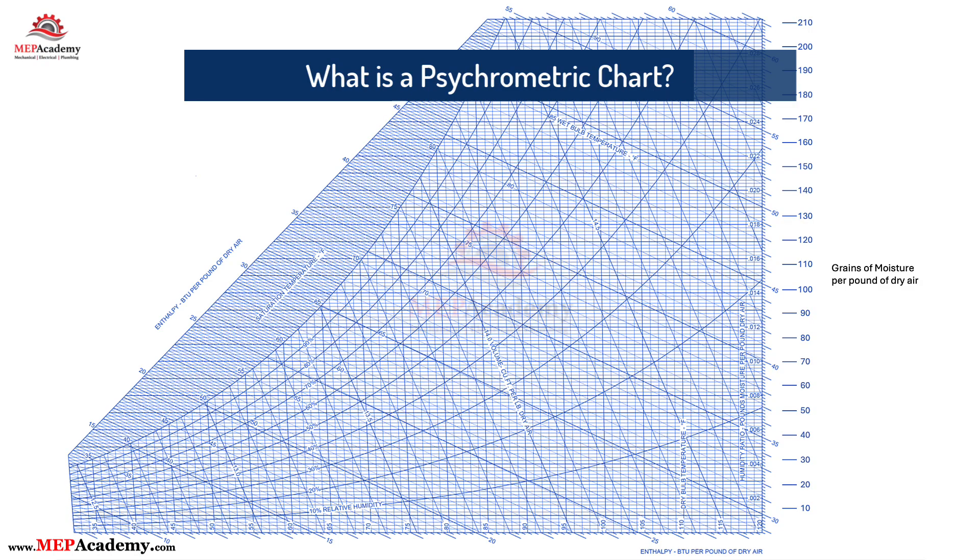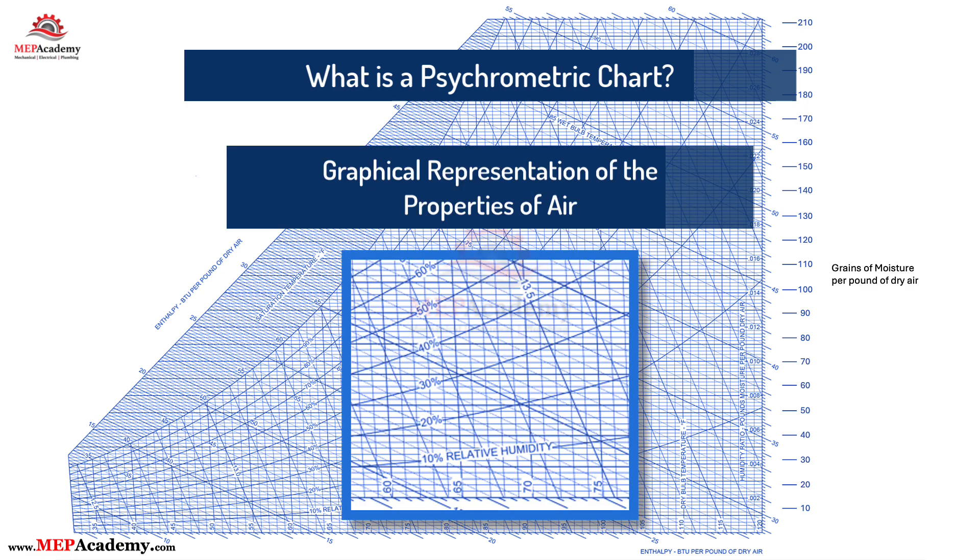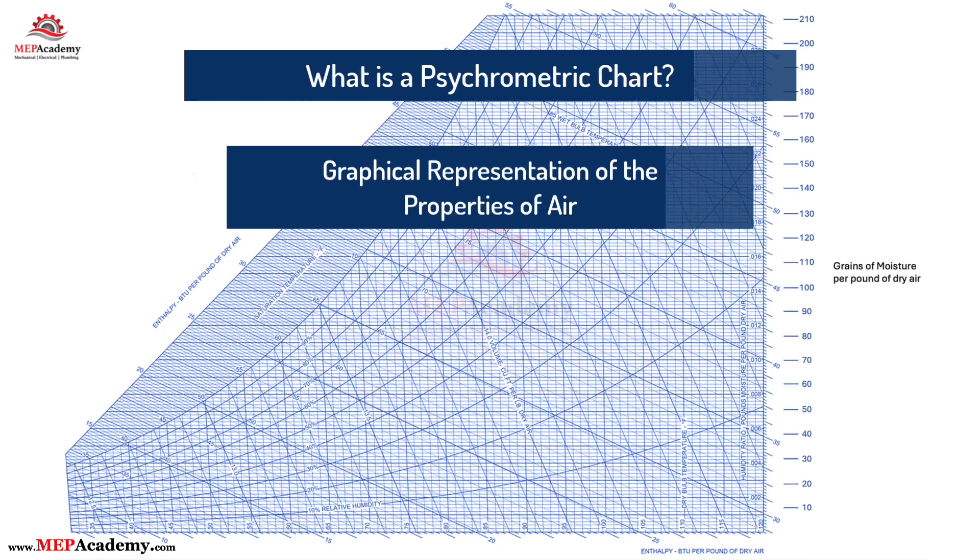What is a psychrometric chart? A psychrometric chart is a graphical representation of the properties of air. It helps HVAC pros analyze air conditioning and ventilation processes. Think of it like a map of air behavior. Here are the key components of the chart.